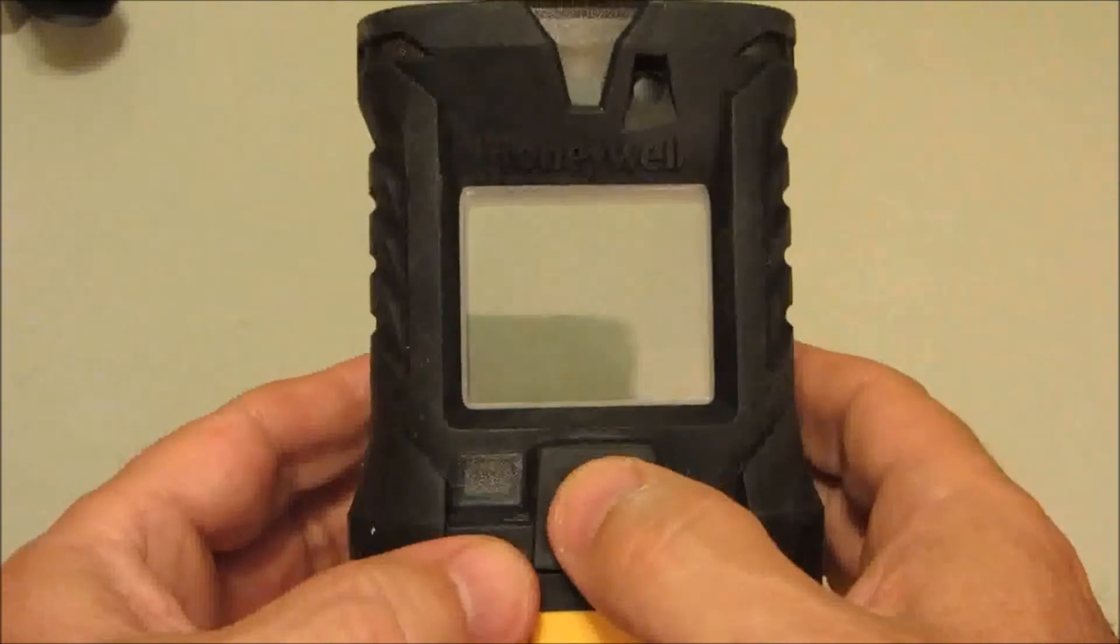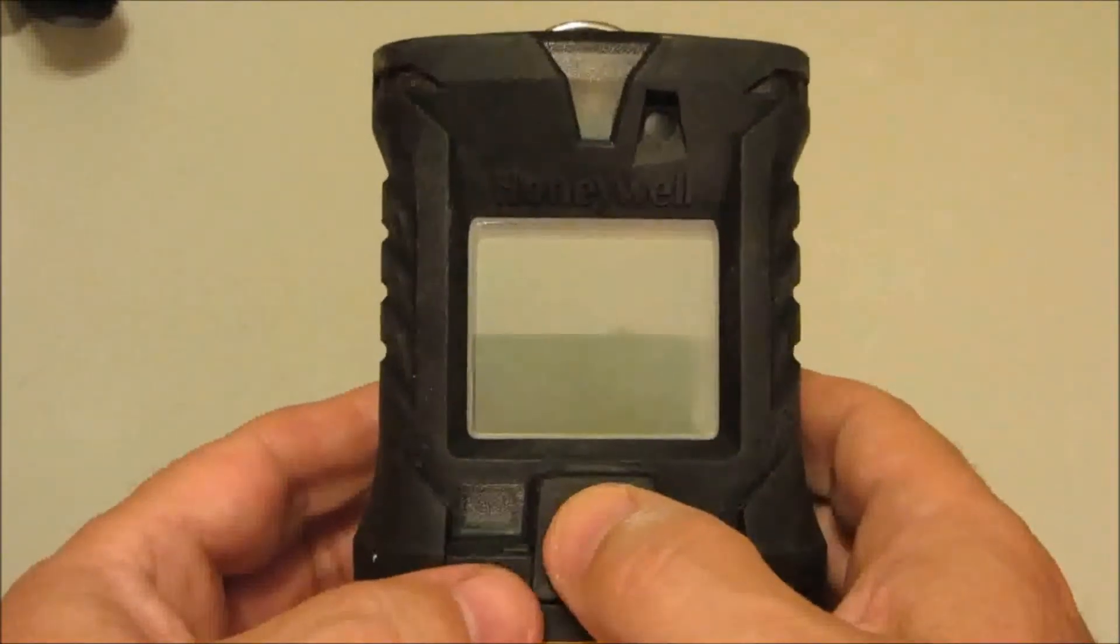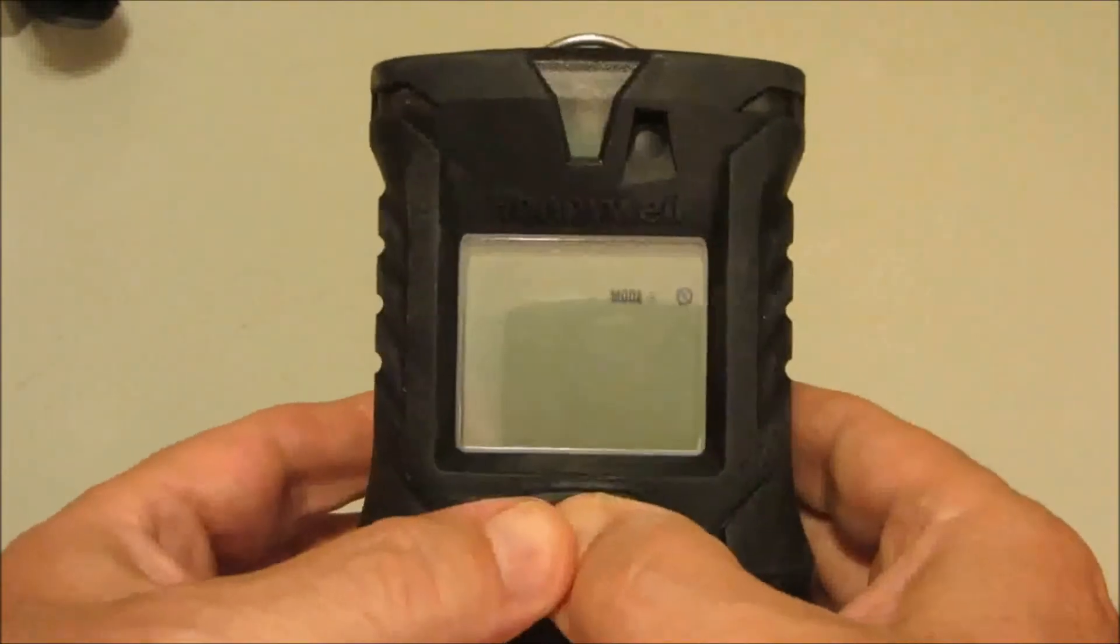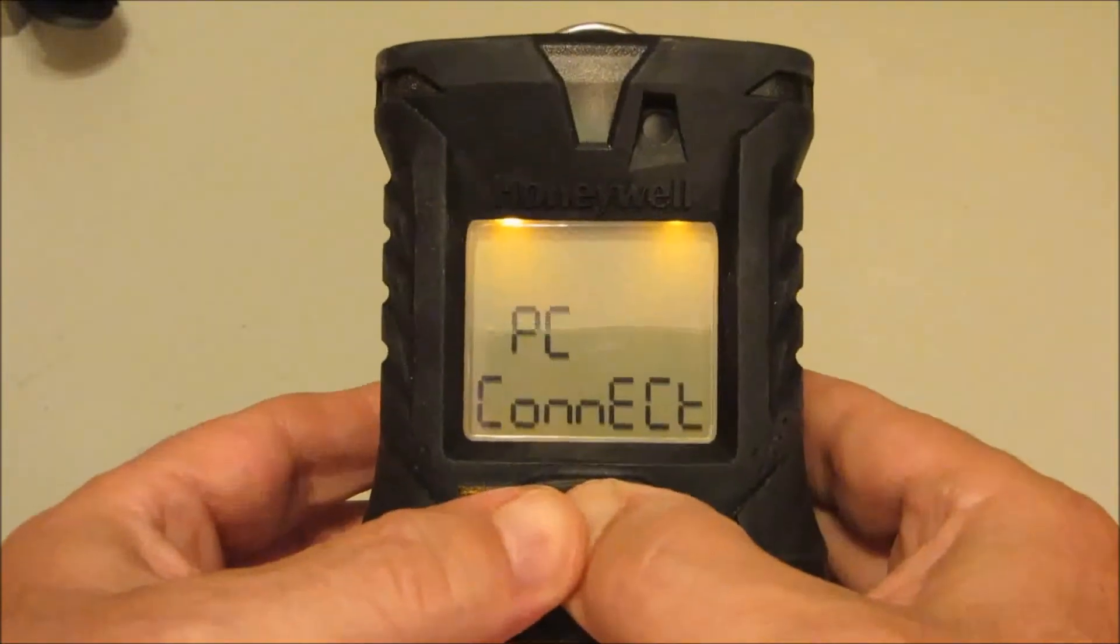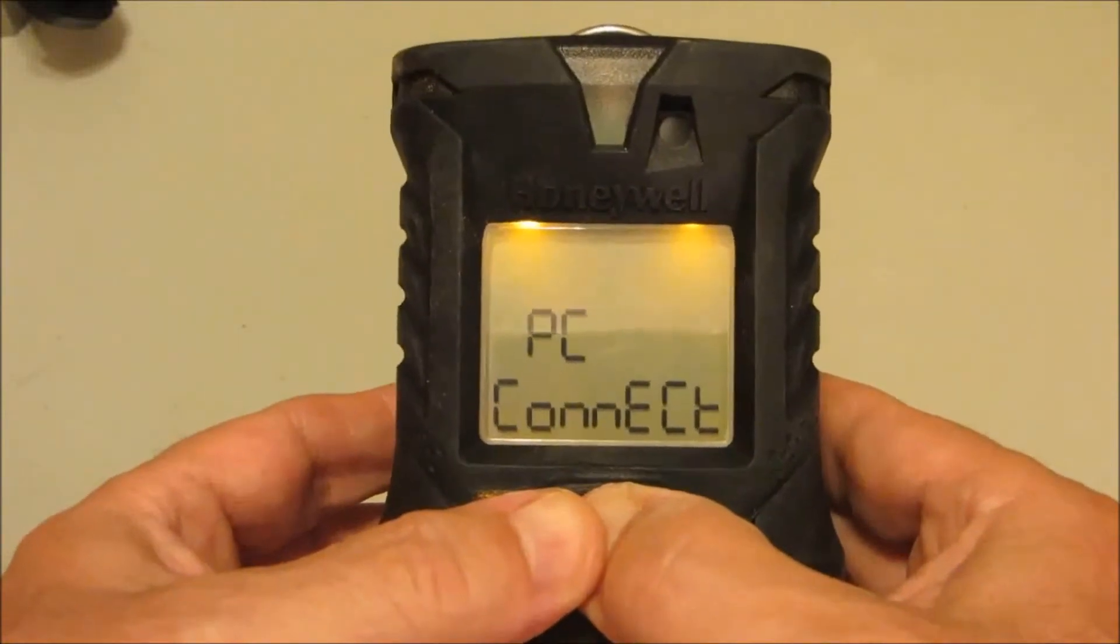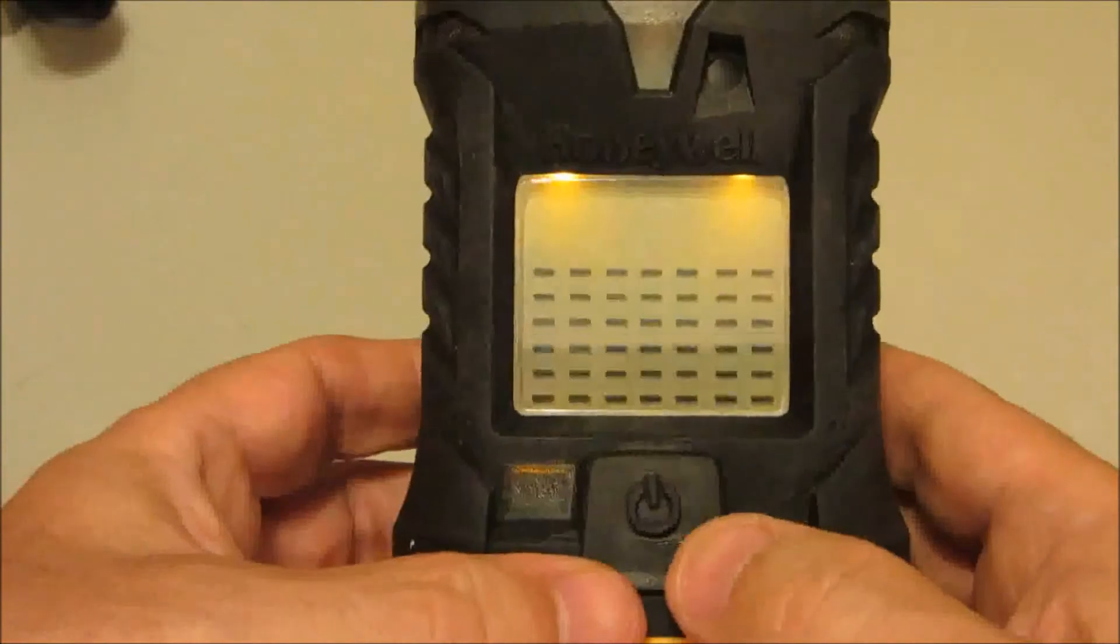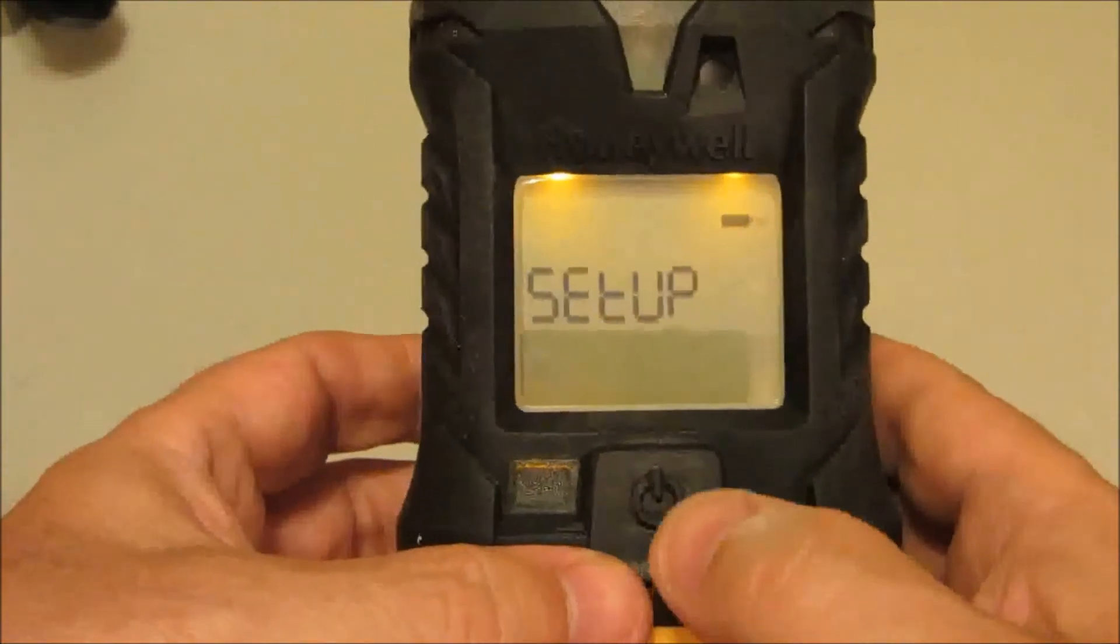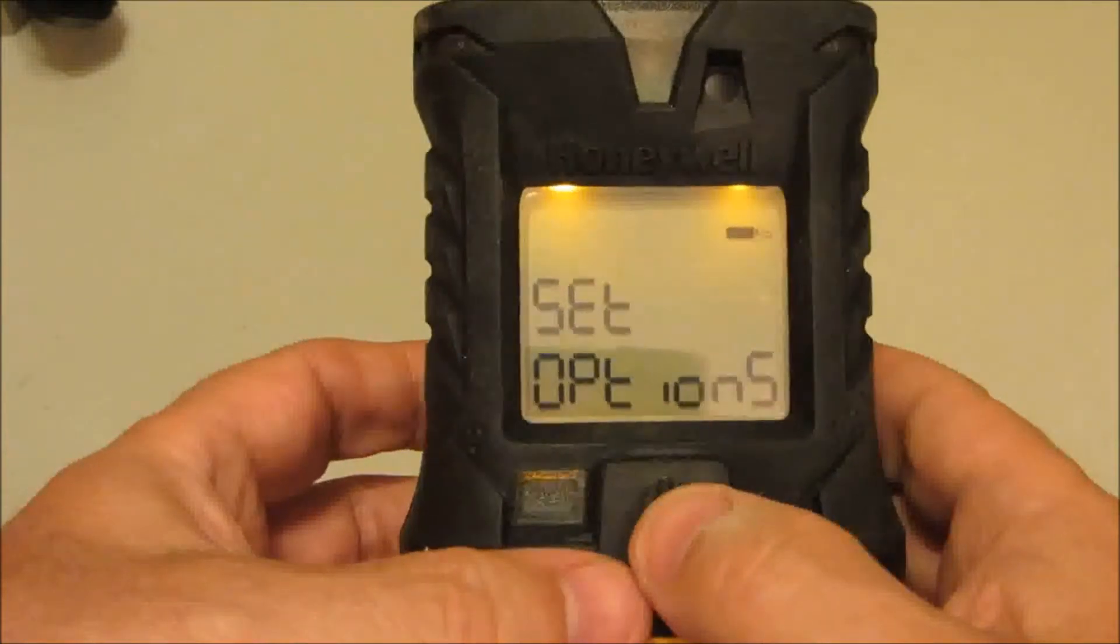Manually configuring the monitor. With the monitor off, press and hold the mode button down. After PC connect, it will say configuration. Let go. Press three times when you see the multiple bars and now it will scroll through all of your options.